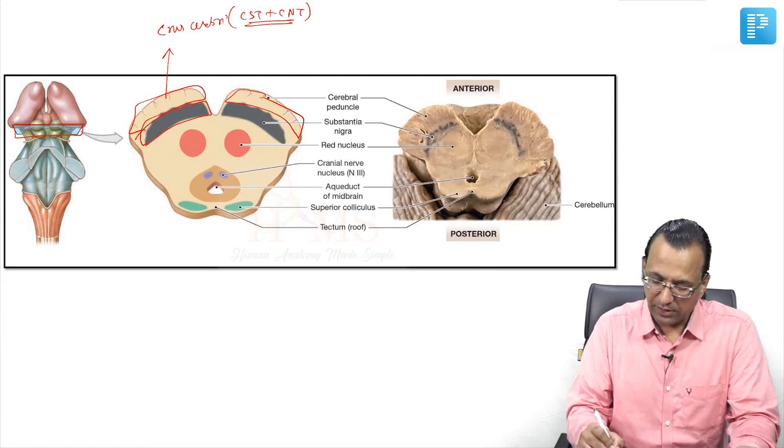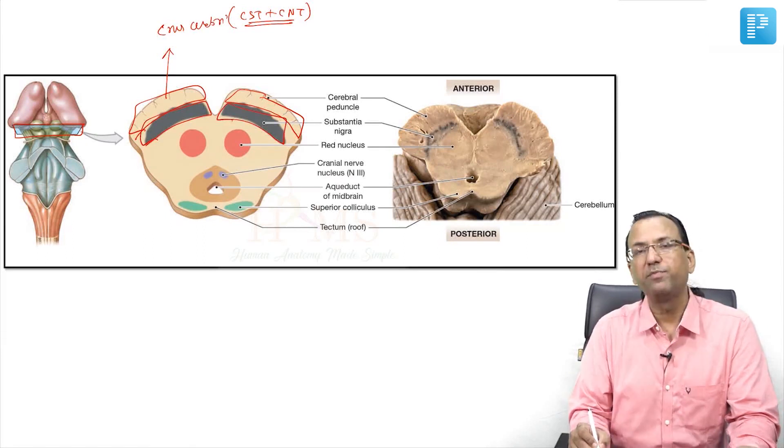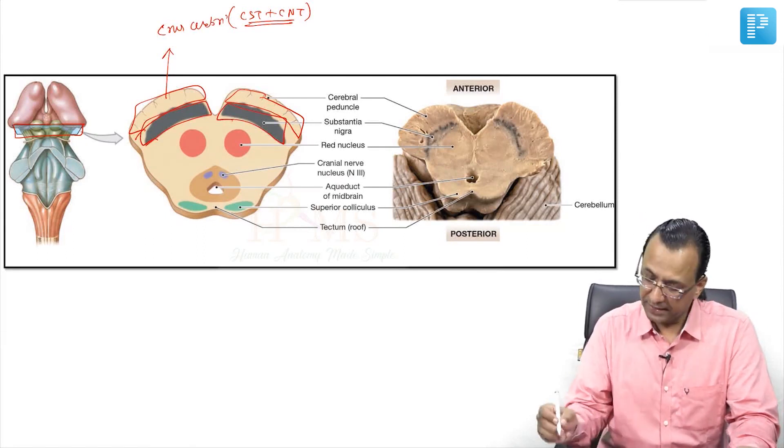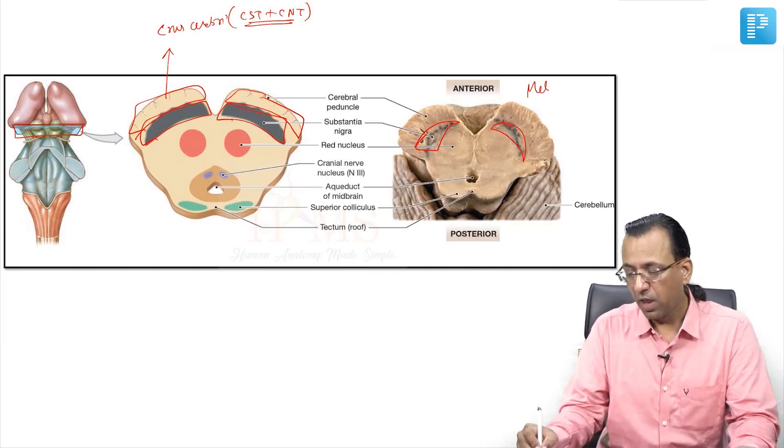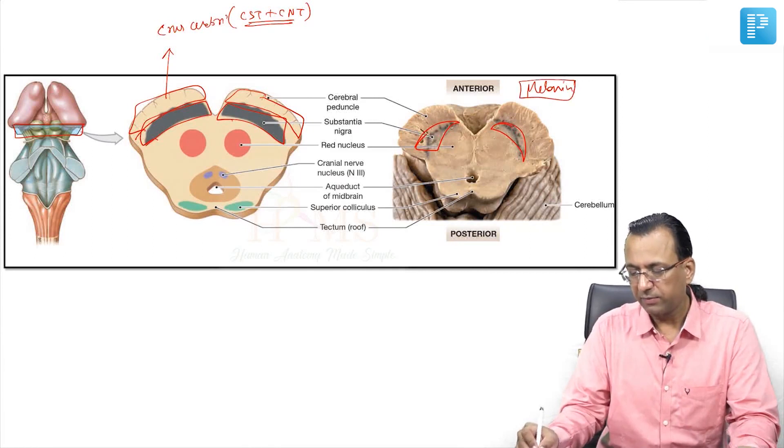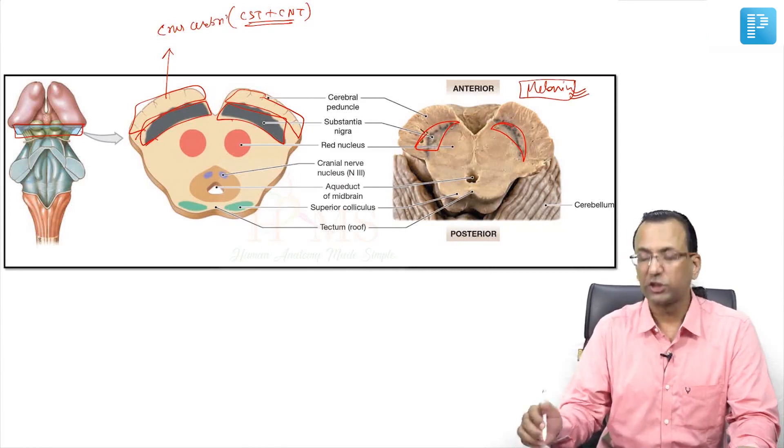Then you will also find substantia nigra, which is a part of the basal ganglia. Here you have the deposition of melanin. Substantia nigra will be dark colored because of the deposition of melanin.